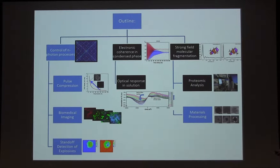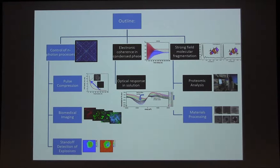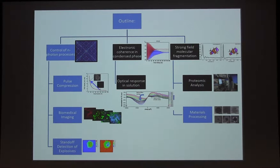Once you can do that, you can develop applications. In my research group, we spend a lot of time doing biomedical imaging, selective excitation to detect cancer, and standard detection of explosives. We have some flame imaging work. But in today's talk, I'm going to focus on things I don't usually present — looking at electronic coherence in condensed phase. I thought the photon echo work had been done starting in the 90s, but more about this optical response in solution and strong-field molecular fragmentation. The motivation is: could we use what we're learning in strong-field fragmentation for proteomic analysis?